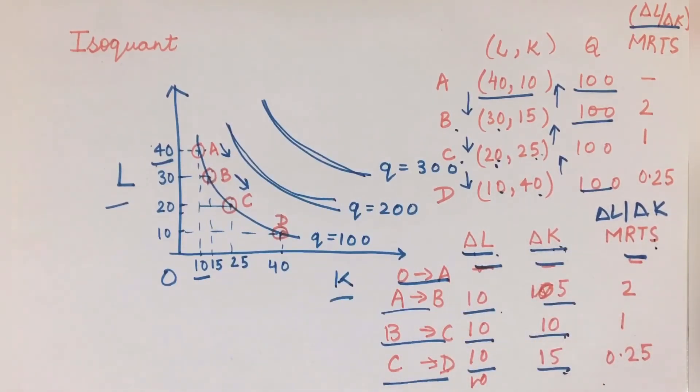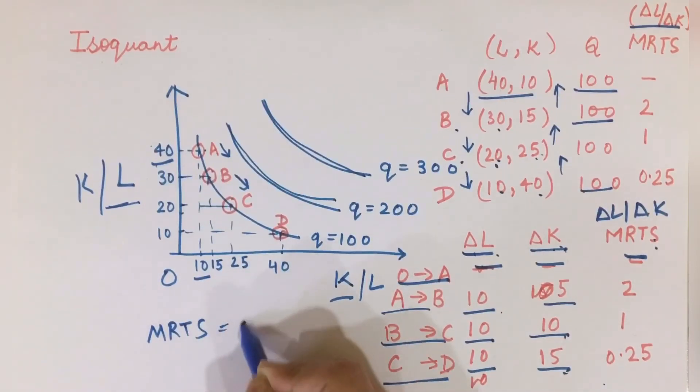Also note that if instead of L, I would have K here and L here, then my MRTS would have been given by ΔK/ΔL. But here what I'm doing is assuming L to be on the Y-axis and K to be on the X-axis. So this was the concept of MRTS.